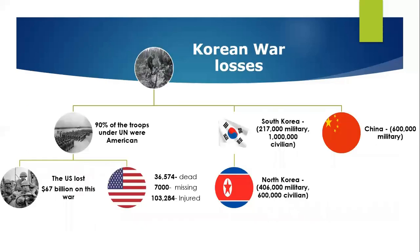Looking at the holistic view of the Korean War: the Chinese had a huge military of about 600,000, and the South Koreans also had a large military. North Korea was much greater than South Korea at that time. In terms of casualties, 36,000 American soldiers were killed.